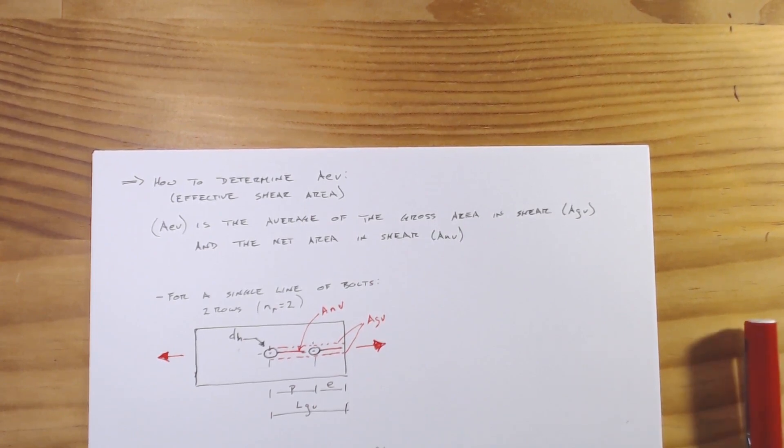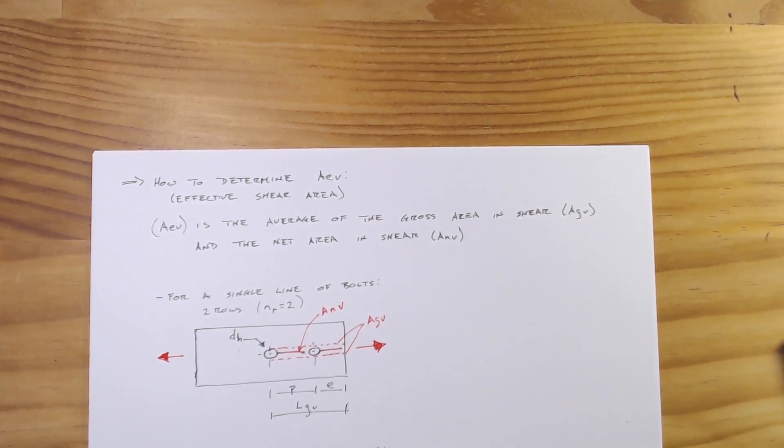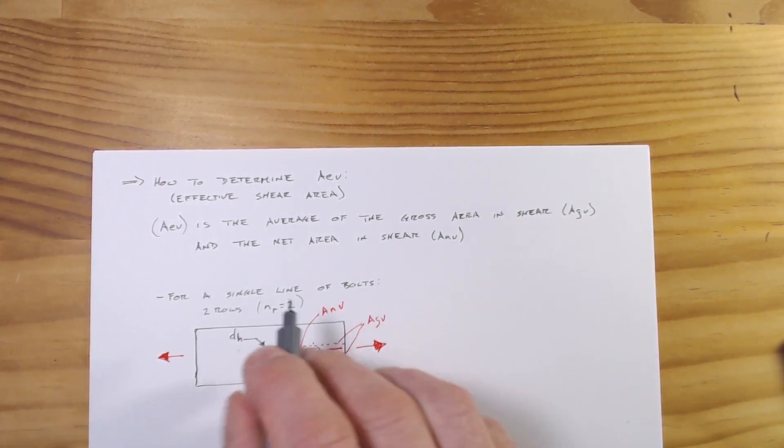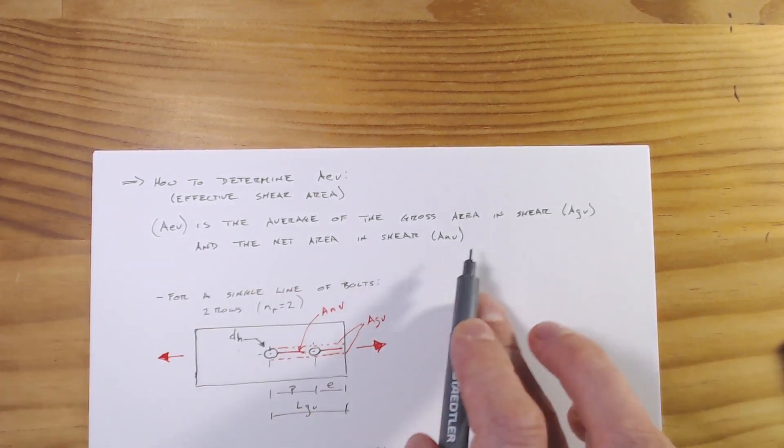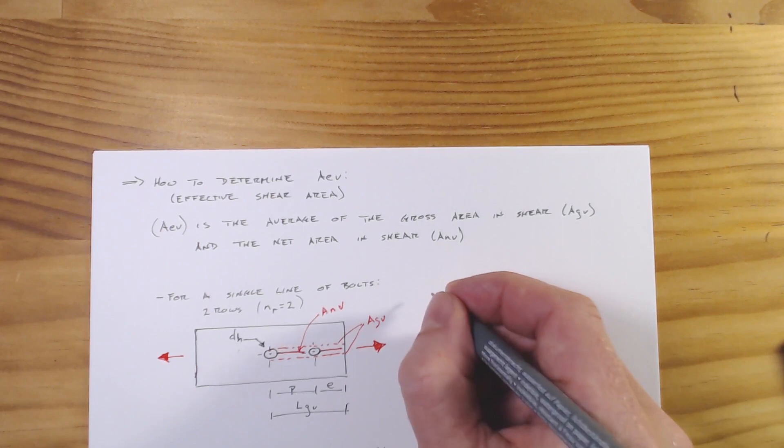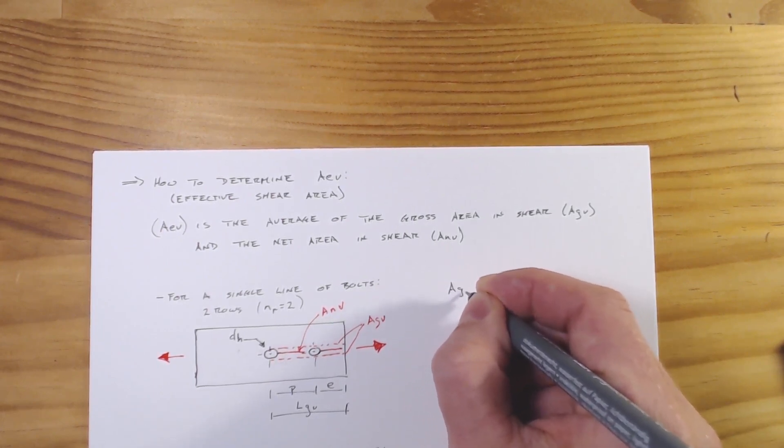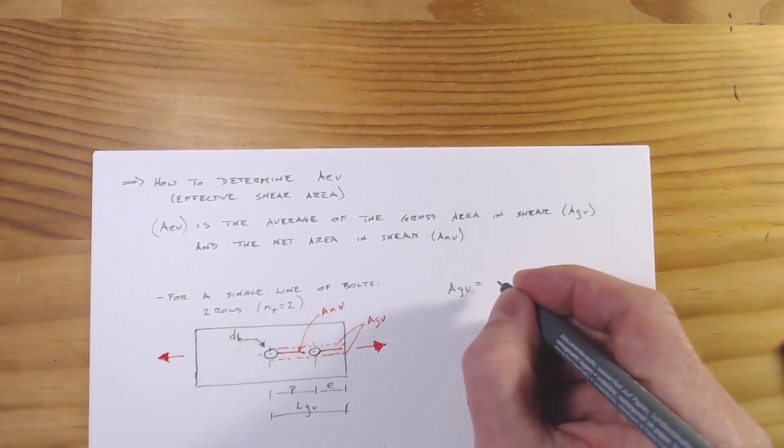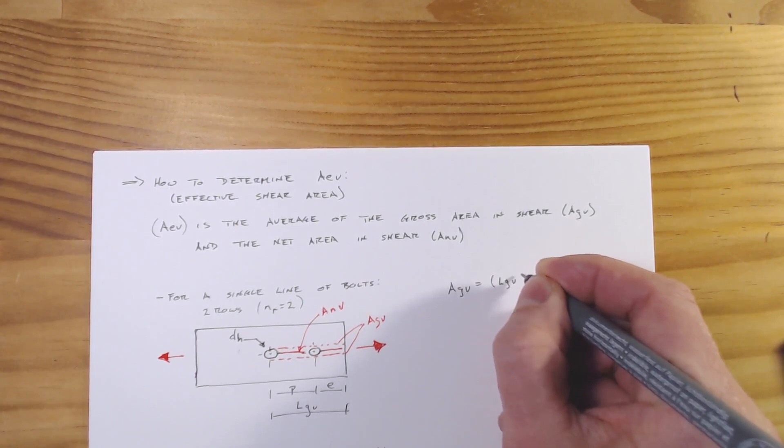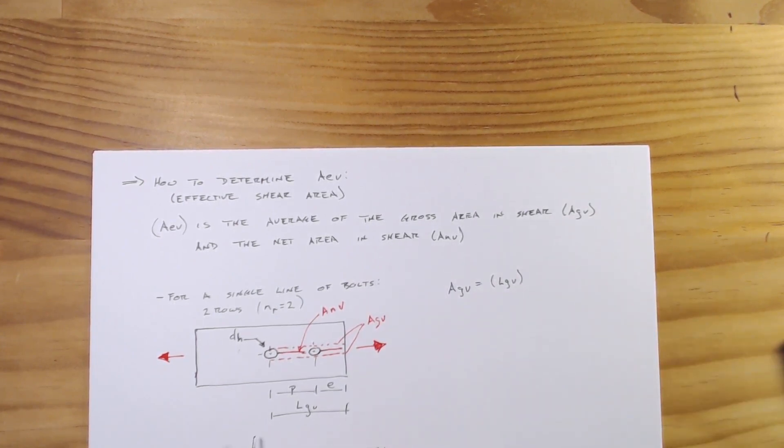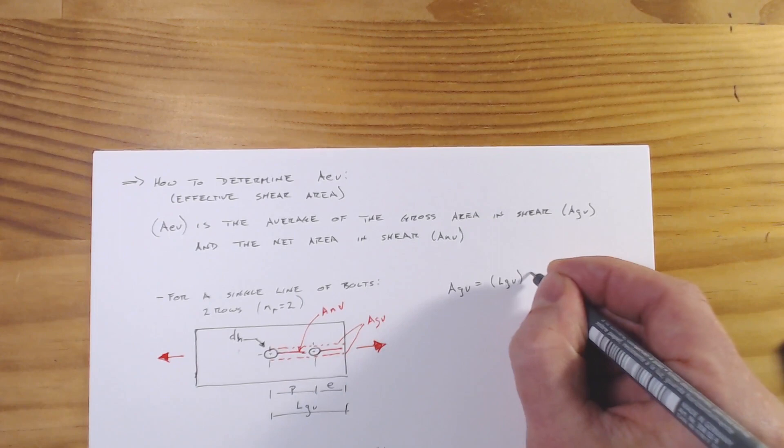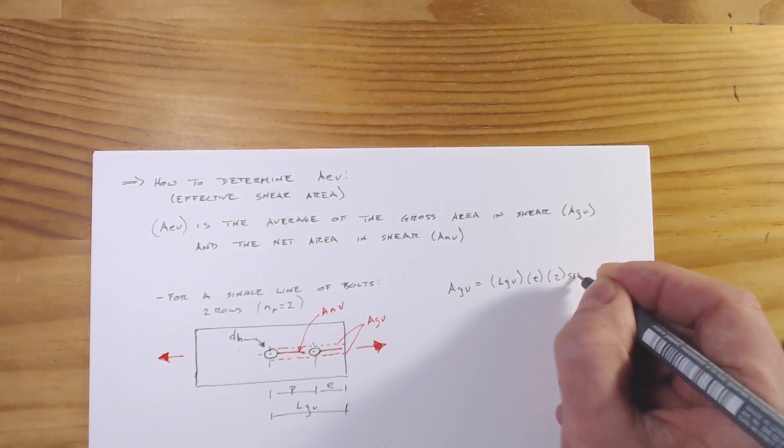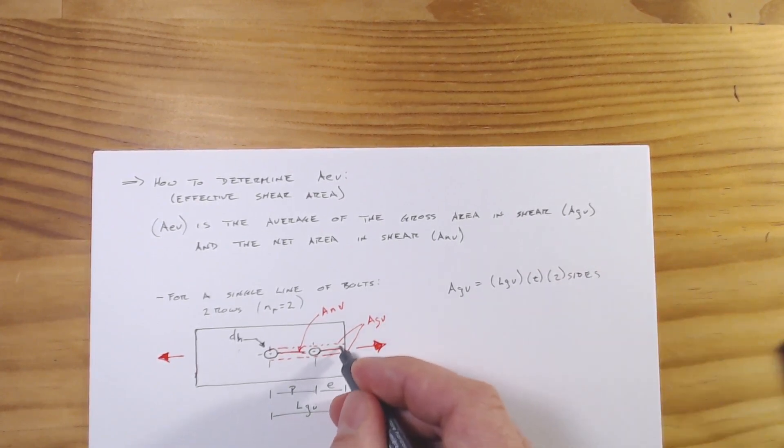And so let's just work out what this equation would be and then it'll sort of fall out from there. So first thing we want to look at is if we need to find what the average between our gross shear area and our net shear area, well let's find the gross shear area first. So A_GV equals, well it's going to be the length, which is just simply L_GV, so the gross length in shear, multiplied by the thickness of the plate times two sides, side one and side two.